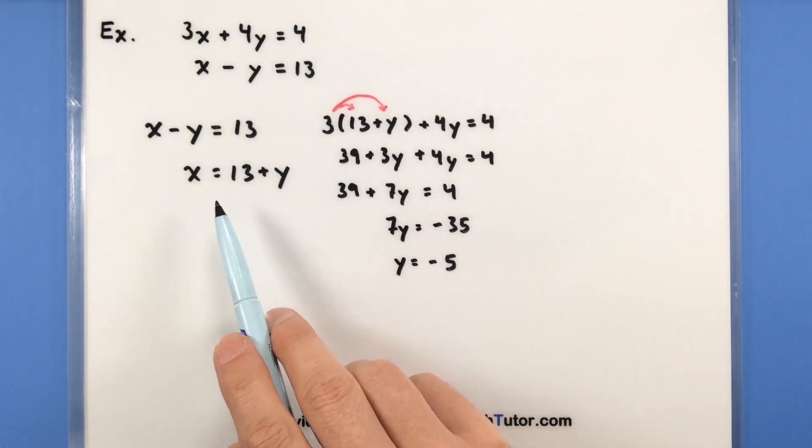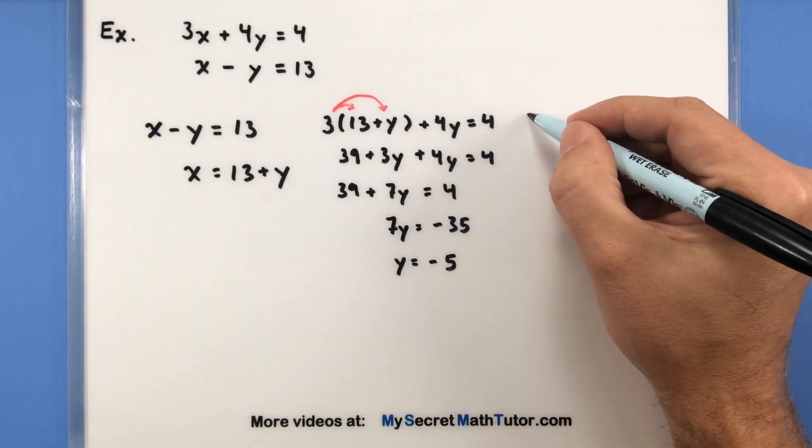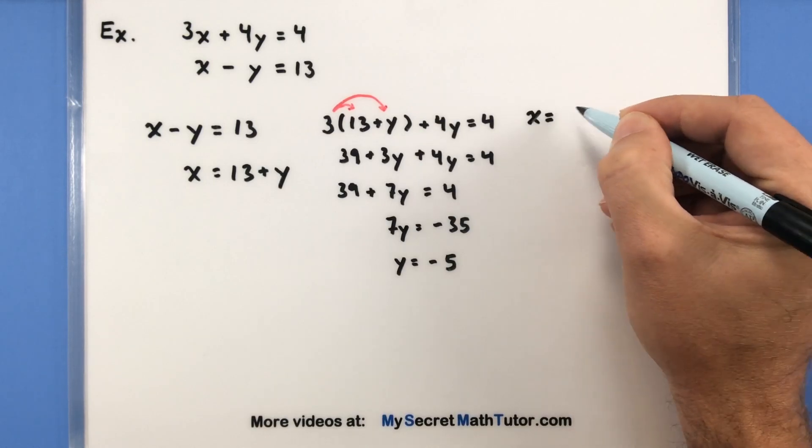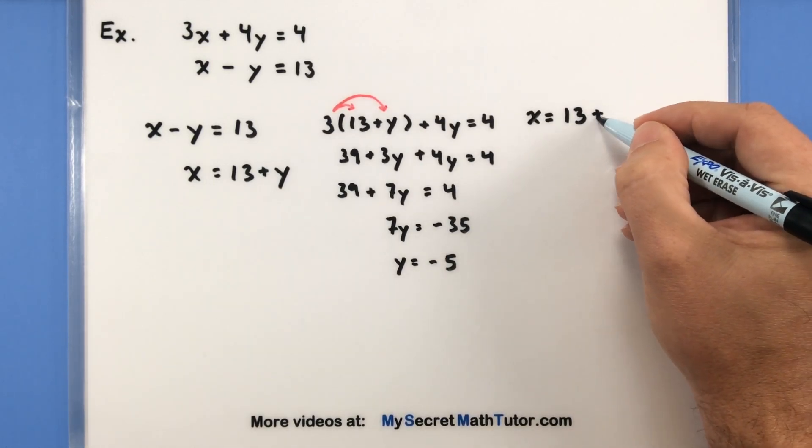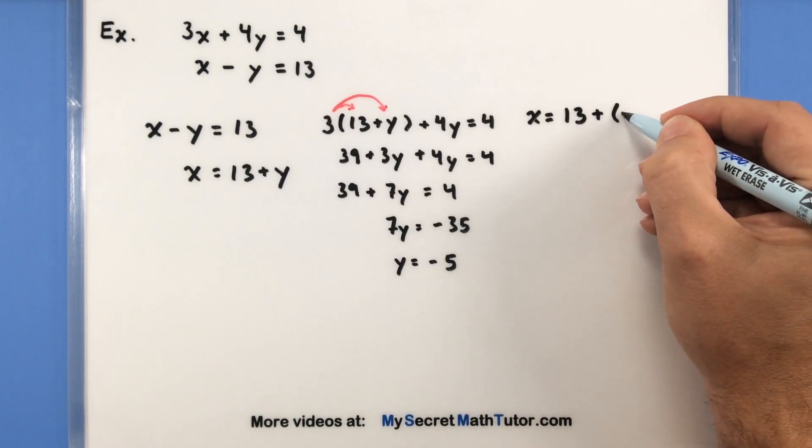or we can even solve it in this one, where we also have x isolated. I'm going to take it into this one since x is already by itself. But again, it's just a process of substituting, substituting the y value we already found, and then solving for that remaining variable.